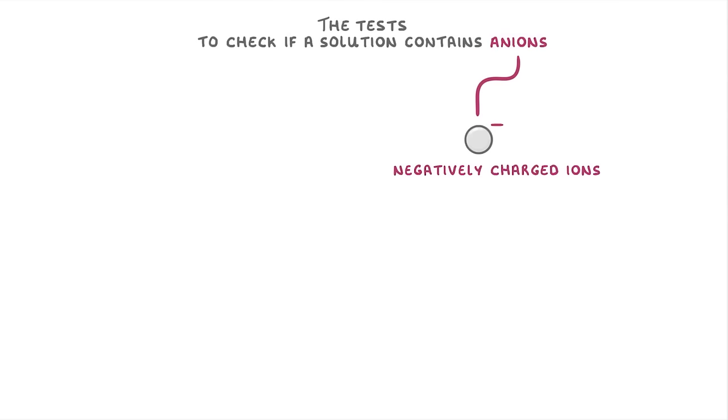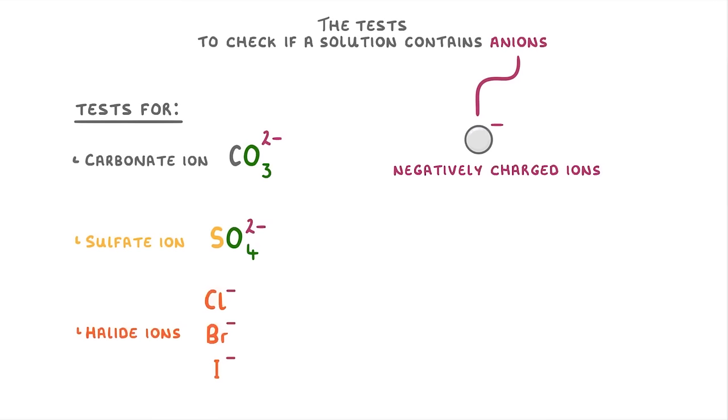In today's video we're going to look at the tests we can do to check if a solution contains anions, which are just negatively charged ions. So we'll cover the tests for the carbonate ion, the sulfate ion, and the halide ions.